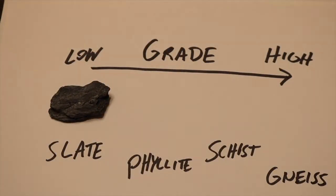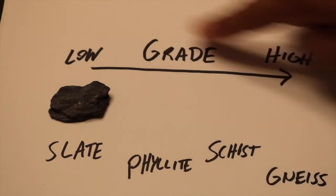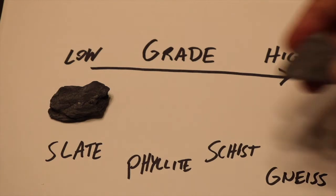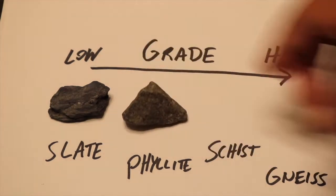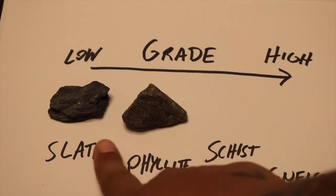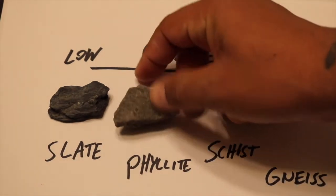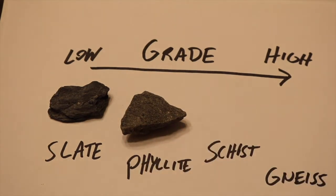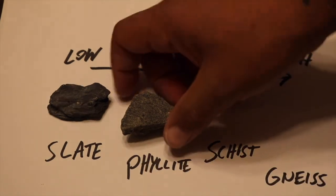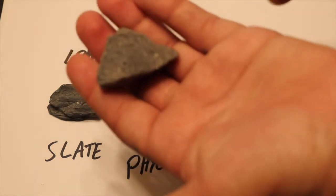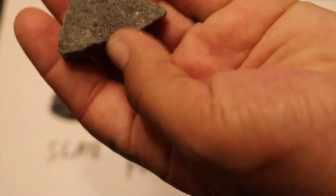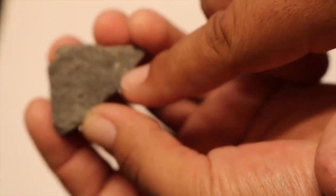The next type of metamorphic rock in our grade scale moving from low to high is phyllite. Phyllite forms under still lower temperatures and pressures, but higher than those of slate. Phyllite can also form from shale and mudstone as its parent rock or protolith. But once we get into phyllite, we begin to see some of these index minerals that form, specifically muscovite, and sometimes you can get garnets, but it's very rare.